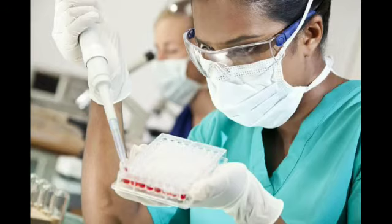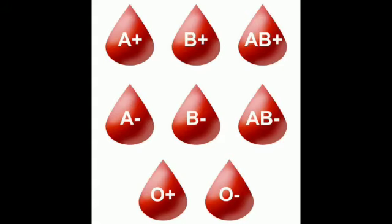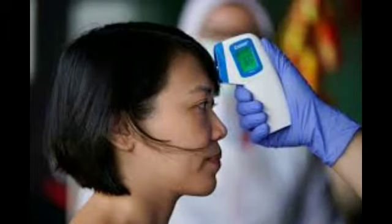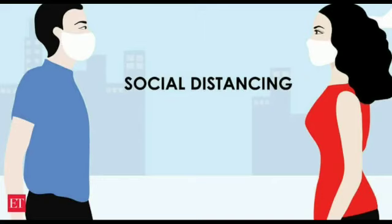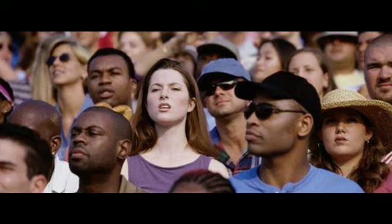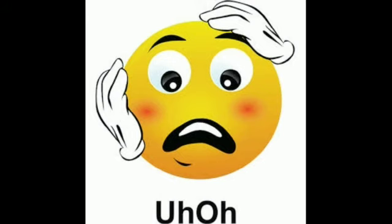So till then, this correlation of blood group with the infection rate does not have any practical significance. If you follow proper precautions with social distancing, irrespective of blood group, you will be protected. On the other hand, if you go easy on these precautions, then even with a favorable blood group, there is a higher chance for you to get infected.